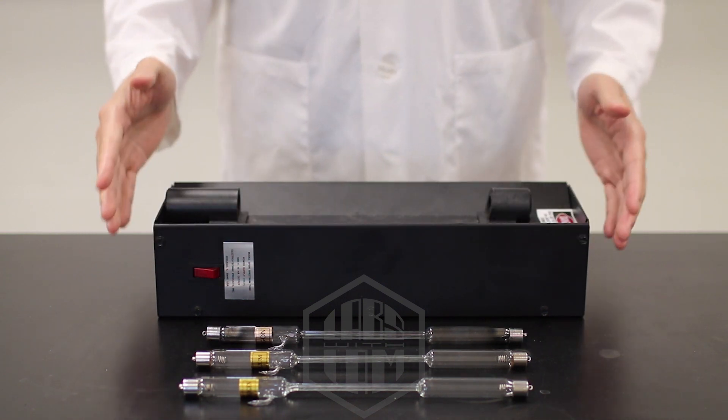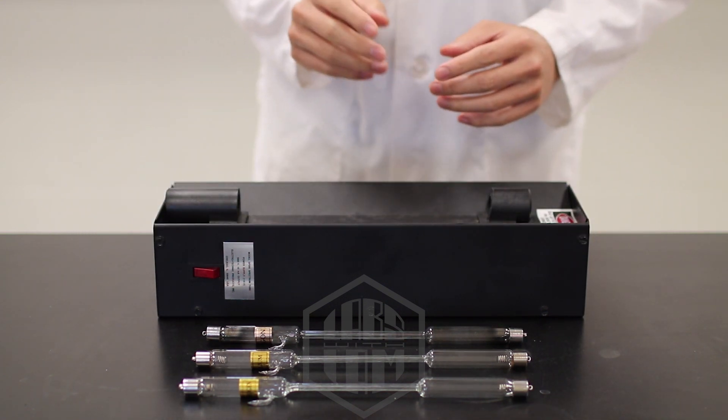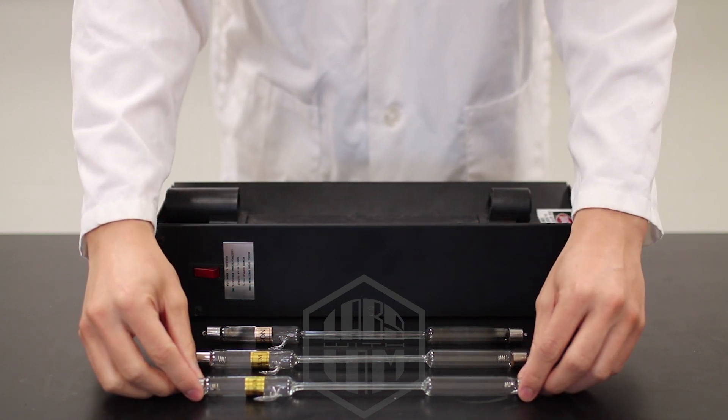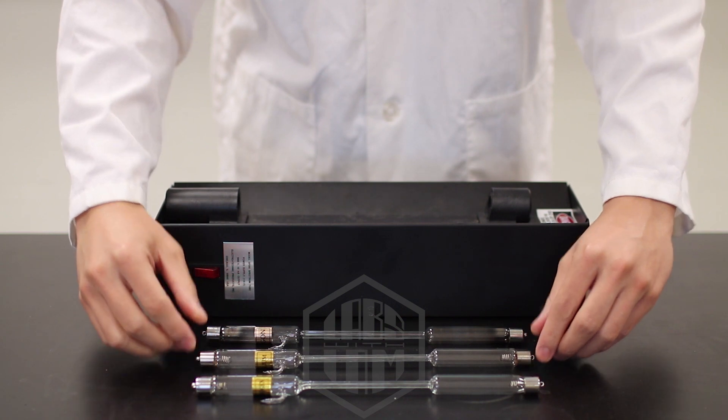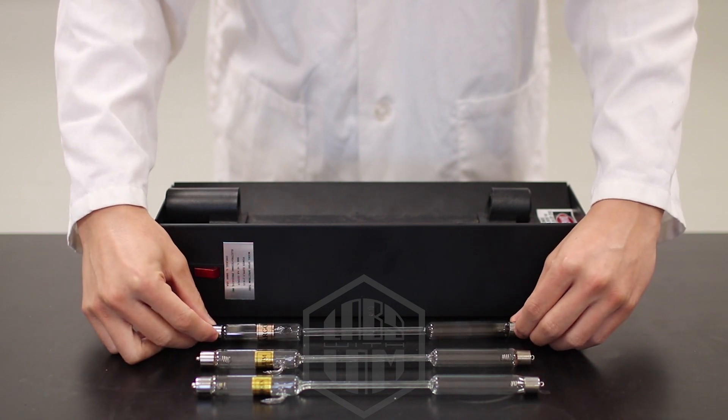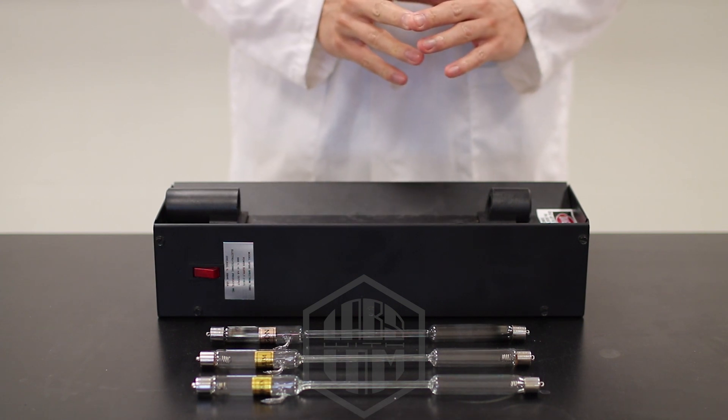Moving on, this giant box is a spectral tube power supply and these interestingly shaped tubes are the spectral tubes. We have three here: Hydrogen, Helium, and Argon. We'll also be looking at a fluorescent light bulb later on as well as taking a quick peek outside, but we'll get there when we get there.